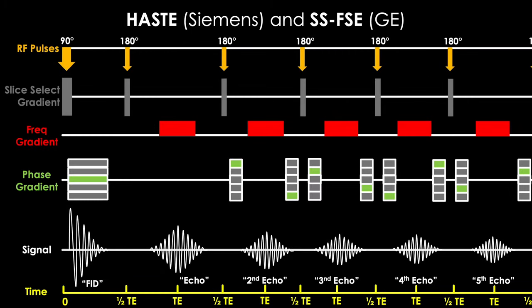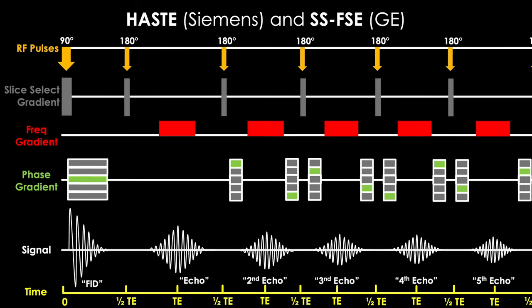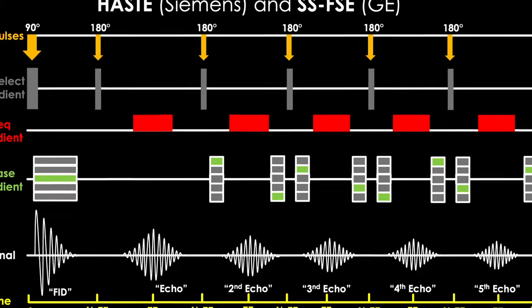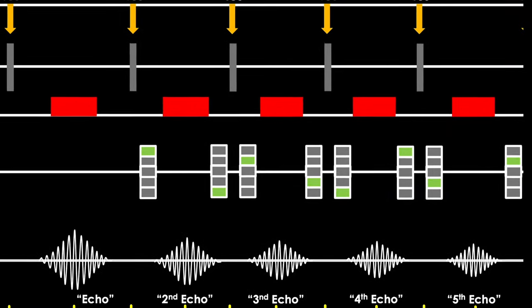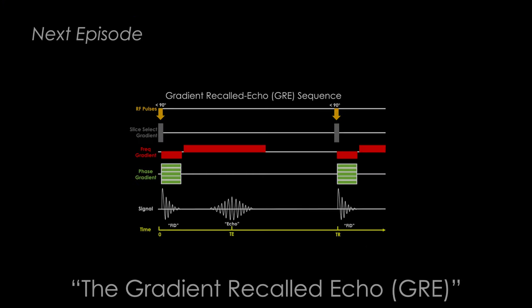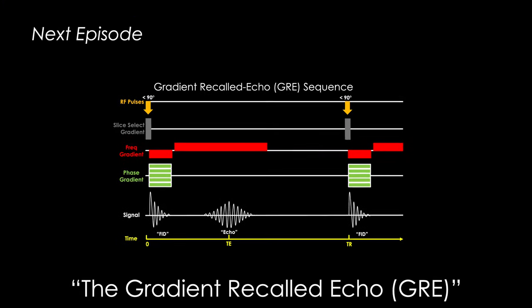So to wrap this up, you are probably still curious as to how this sequence works. How are we able to make the echo reappear over and over again so many times? And what exactly is going on with these phase encoding gradients here? This is a perfect segue into our next lecture. The Gradient Recalled Echo.